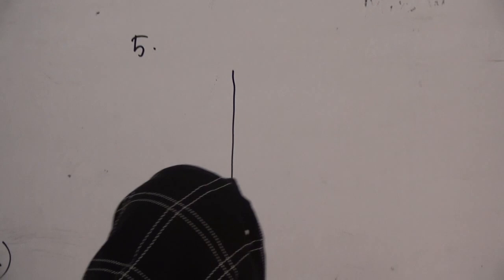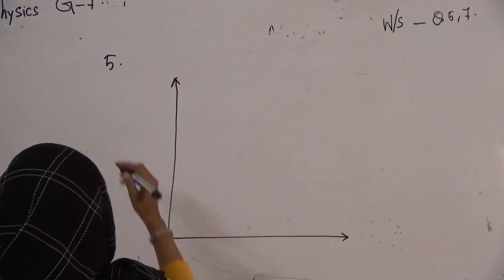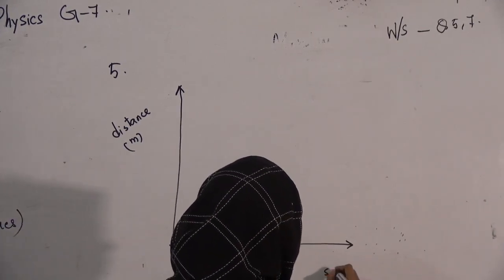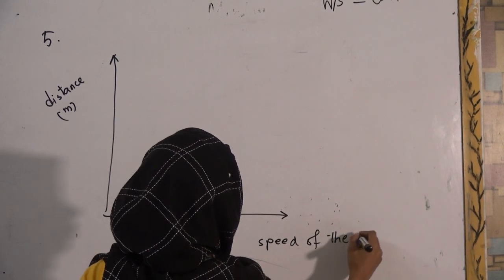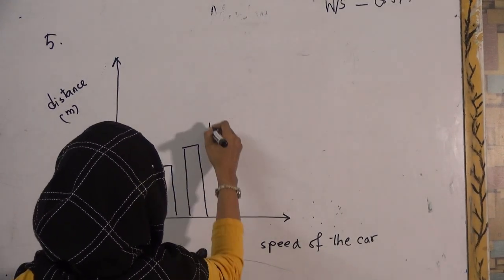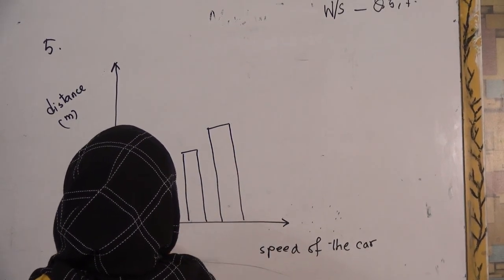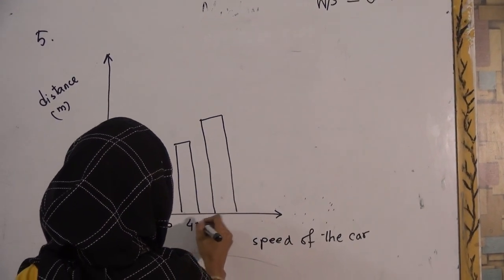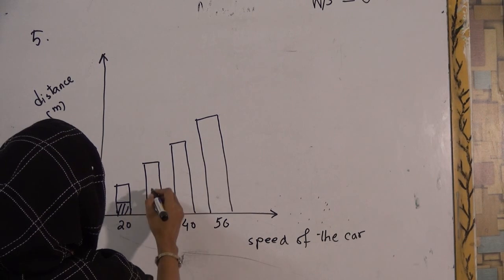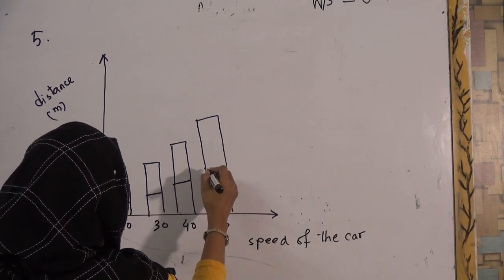This question is related to stopping distance. Let me draw it on the board. On the y-axis, you have distance that is stopping distance, distance in meter. And on the x-axis, you have speed of the car. So this is a histogram. And you can see the bars. I'm not drawing all the bars, I will just pick few. So 20, 30, 40, and this is 50. And you have up to 70. If this is thinking distance, this would be braking distance, thinking, braking, thinking, braking, thinking, and braking.